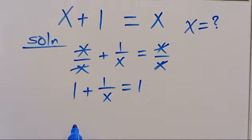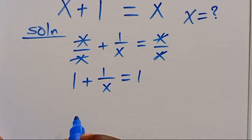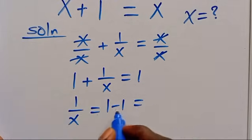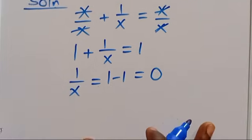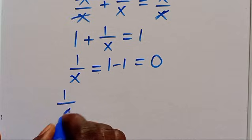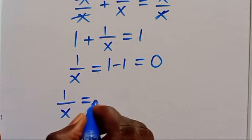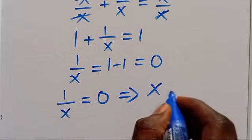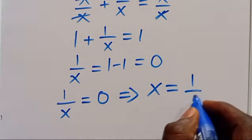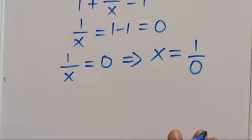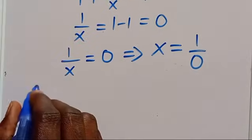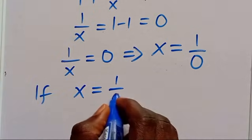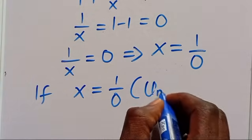Taking the 1 to the other side, we are going to have 1 divided by x equals 1 minus 1, and this gives us 0. So we have 1 divided by x equals 0. This implies that x equals 1 divided by 0, which is undefined.